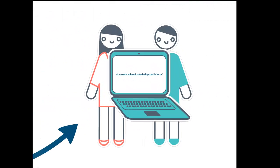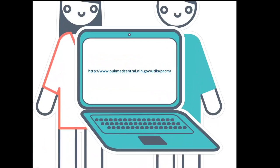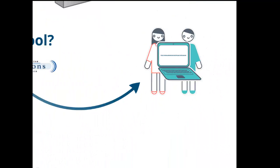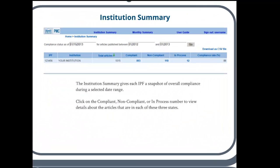So you get your PAC-R role, and you go to the URL, and you log in. The first thing you're going to see is the institution summary page. This is a snapshot of your overall compliance, so you'll see the total articles that are associated with your institution, along with the compliance status of those articles.